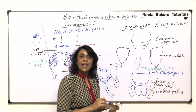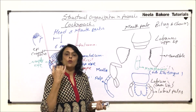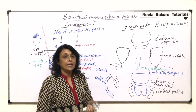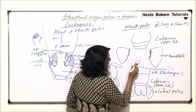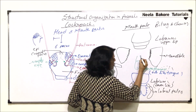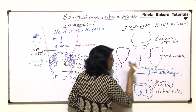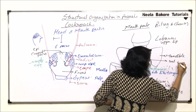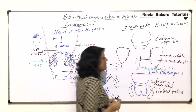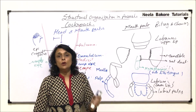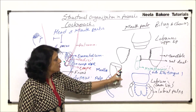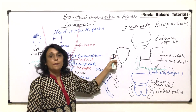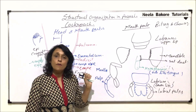The hypopharynx helps the insect to push those chopped pieces back into the buccal cavity. There is also an opening at the base of the hypopharynx, which is the opening of the salivary duct. We will see the location of the salivary duct when we come to the digestive system. To summarize, the mouth parts are: upper lip (labrum), lower lip (labium), a pair of mandibles, and a pair of maxillae.